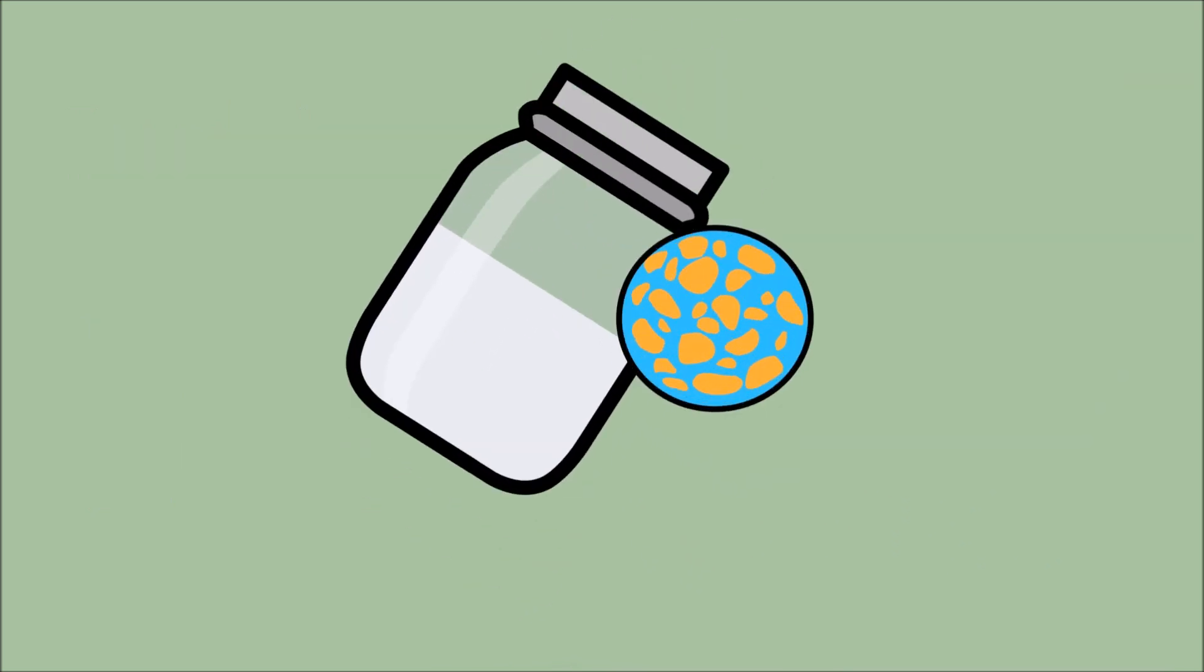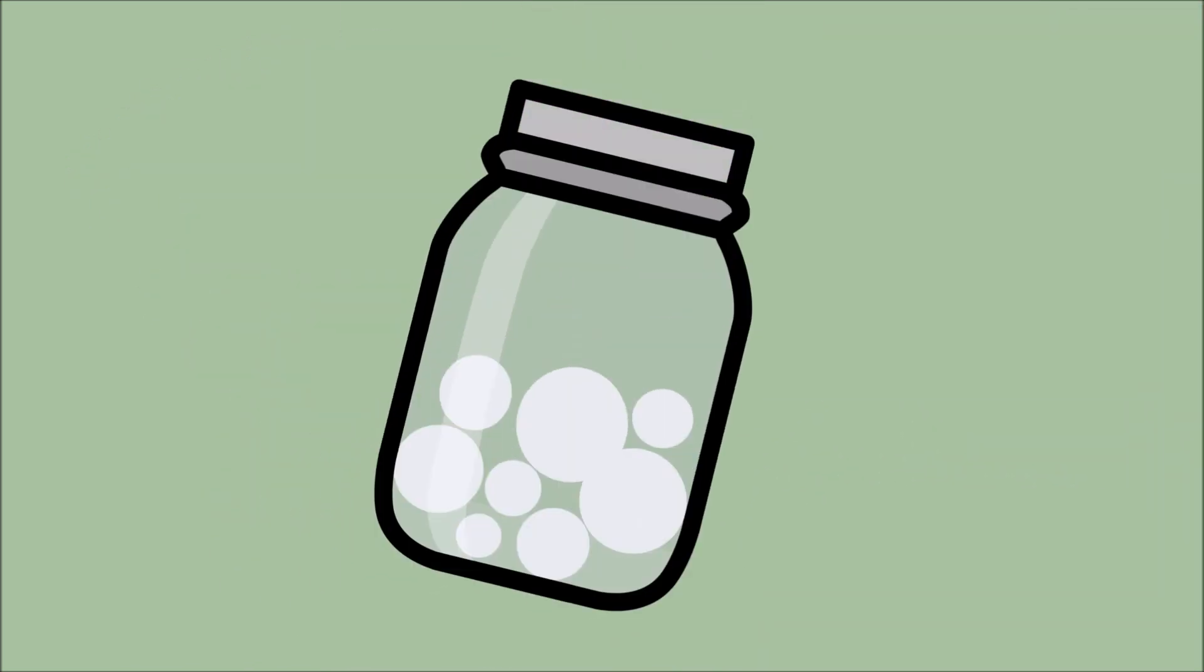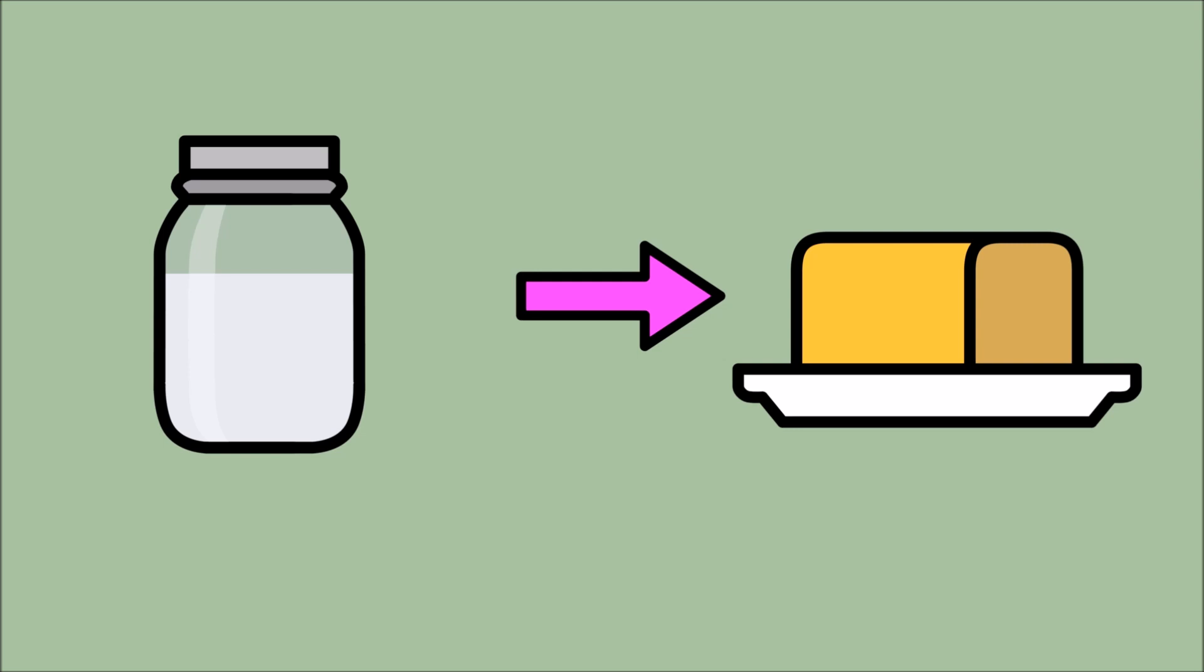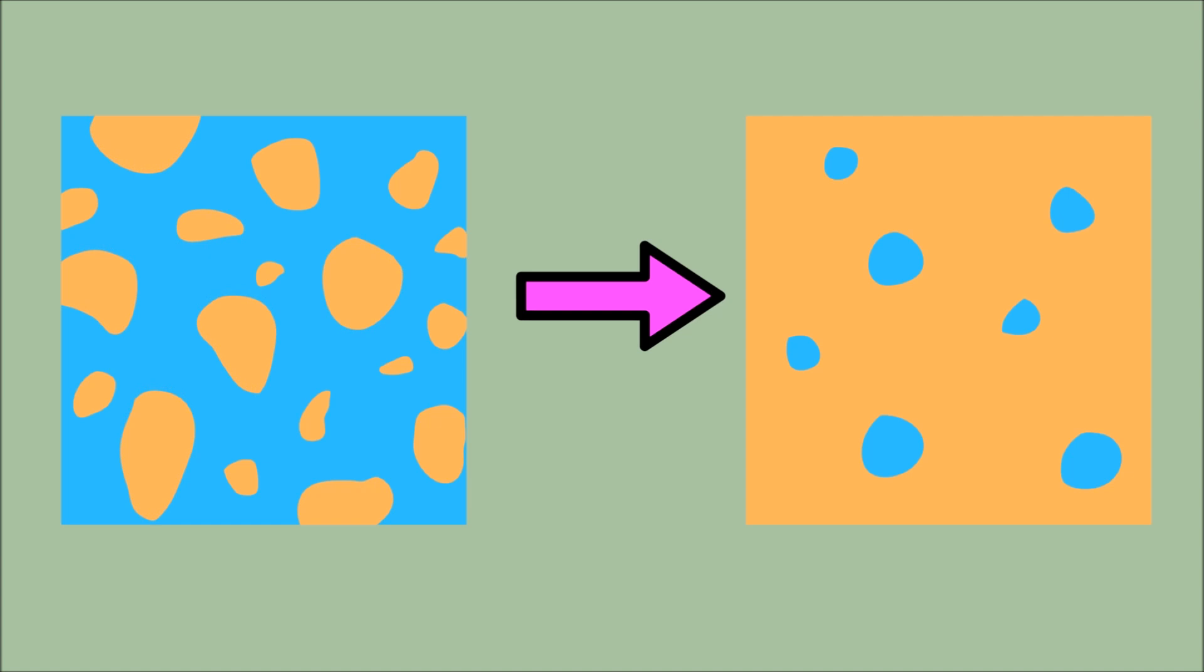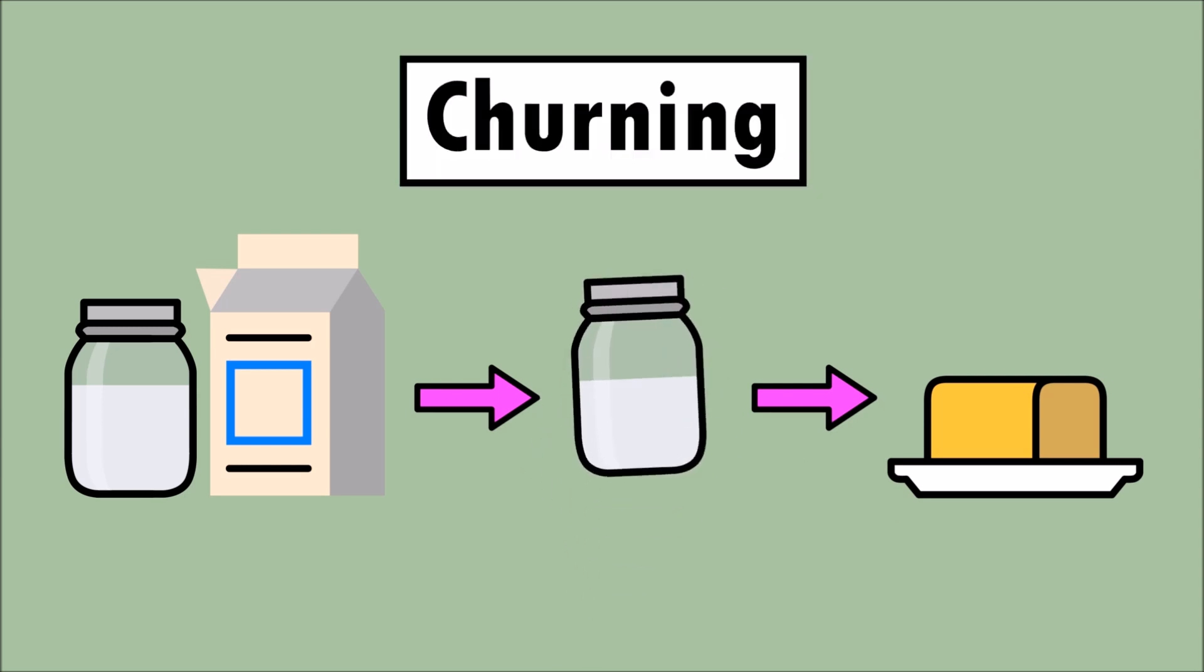Shaking the cream causes the fat particles to join together and eventually forms butter! When the cream has turned into butter, it is still a colloid emulsion mixture! But now it's tiny water droplets that are inside the fat! The entire butter making process is called churning!